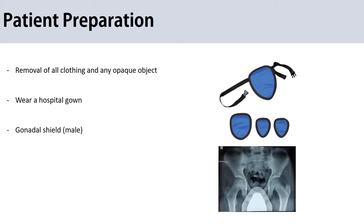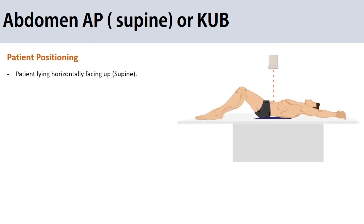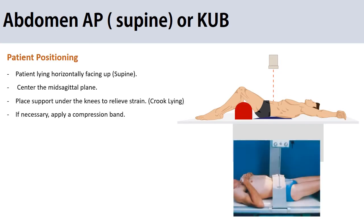For the supine position, have the patient lie on the table with a pillow under the head and a support under the knees to enhance comfort. The technologist may also use a compression band to minimize motion and reduce abdomen thickness, which may consequently reduce patient dose.